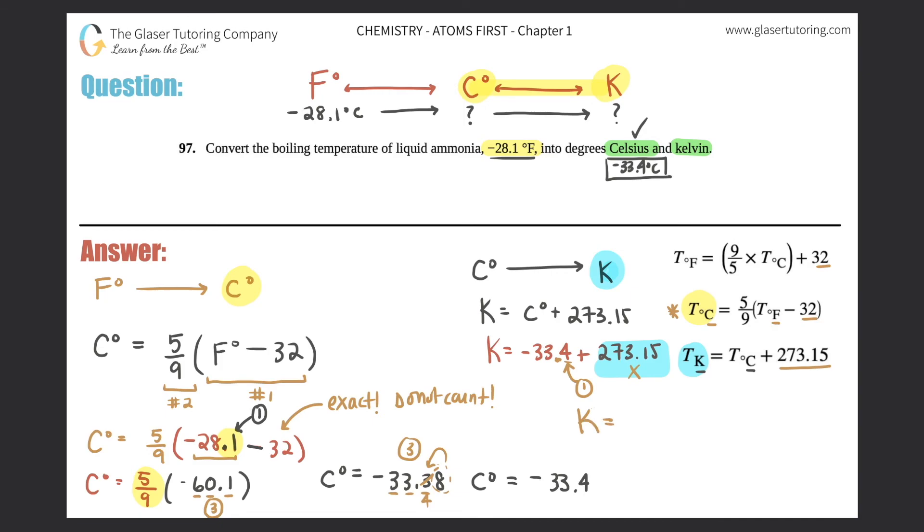So Kelvin equals, when I add the two together, -33.4 + 273.15, I get 239.75. However, I need one after the decimal, which would be the seven. The five rounds the seven up to an eight. So the Kelvin would be 239.8. And that is the Kelvin temperature: 239.8 Kelvin.